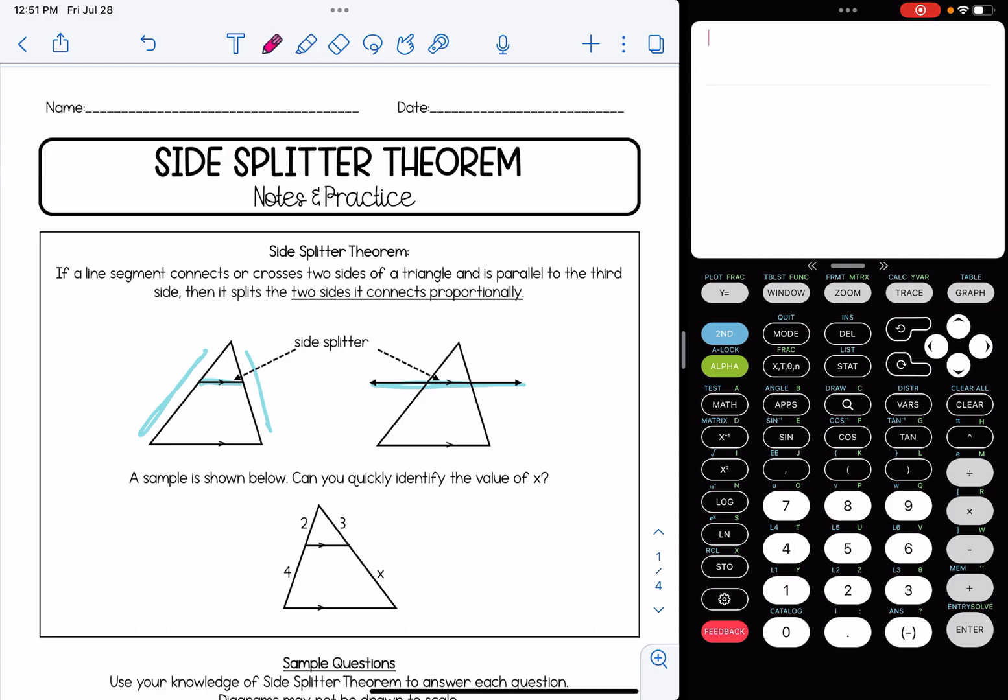If we look at the sample below here, basically what this means is we don't have to separate the triangles and redraw them and figure out the corresponding sides. We could just say, okay, well on this left side we have 2 and 4, and on this right side we have 3 and X.